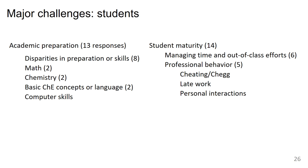Another category of major challenges is the students themselves, broken into academic preparation and student maturity. Under academic preparation, there are disparities in preparation or skills among the students, and weaknesses in math, chemistry, or basic chemical engineering concepts and language. Under student maturity, the major problem is teaching them how to manage their time and out-of-class efforts, and teaching them about professional behavior.